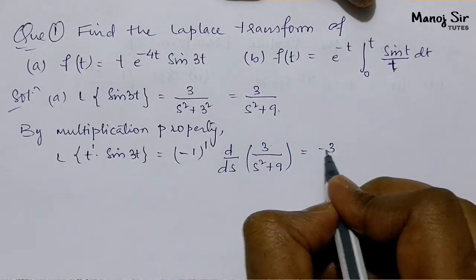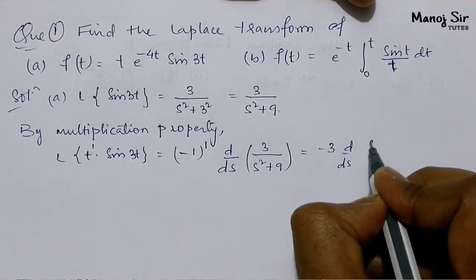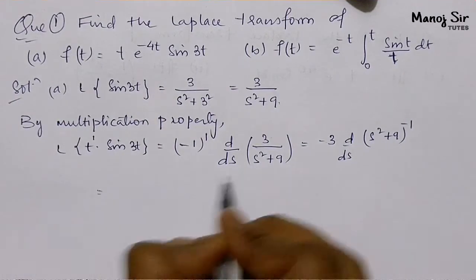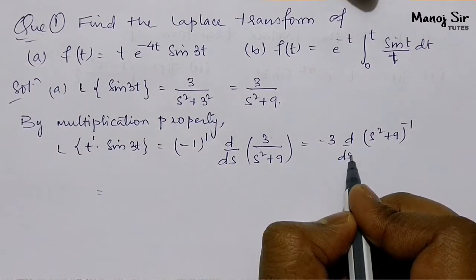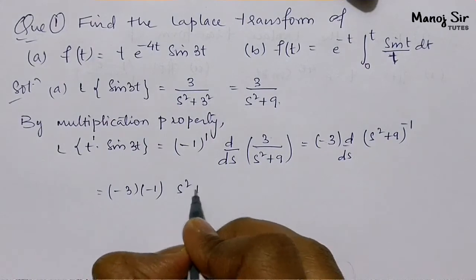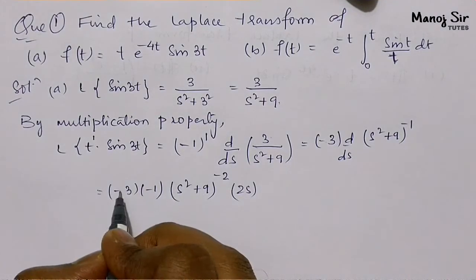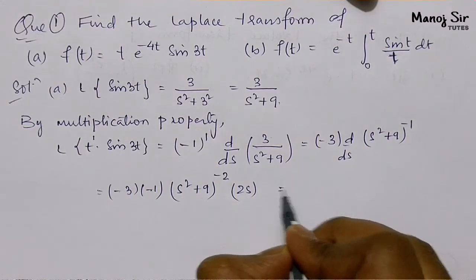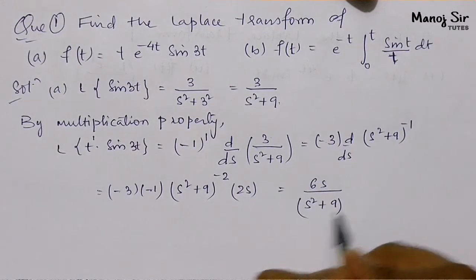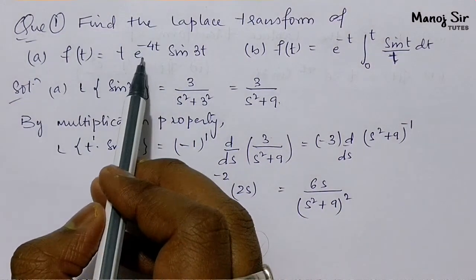This gives us −3 · d/ds [(s² + 9)^{−1}]. Differentiating with respect to s: −3 · (−1)(s² + 9)^{−2} · 2s = 6s / (s² + 9)². So L{t·sin 3t} = 6s / (s² + 9)².